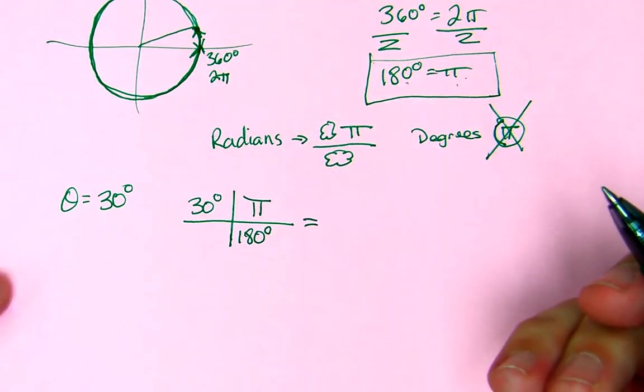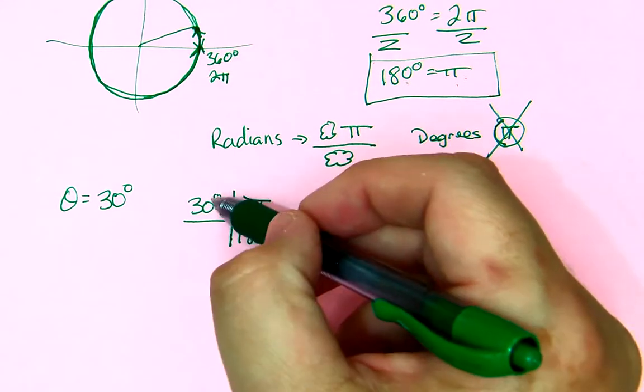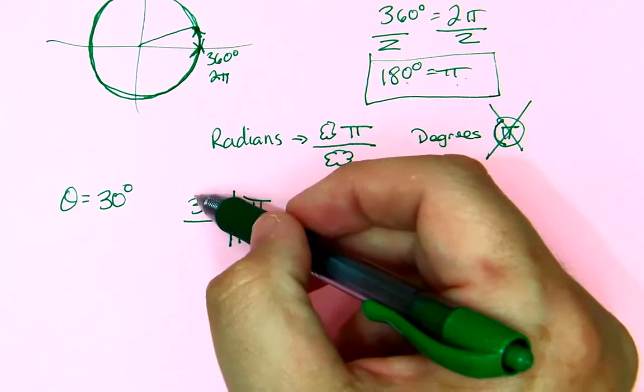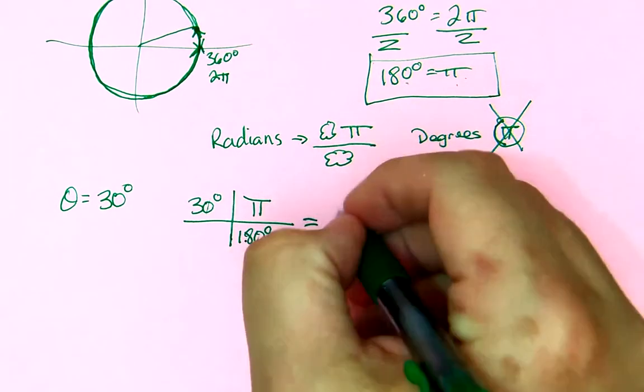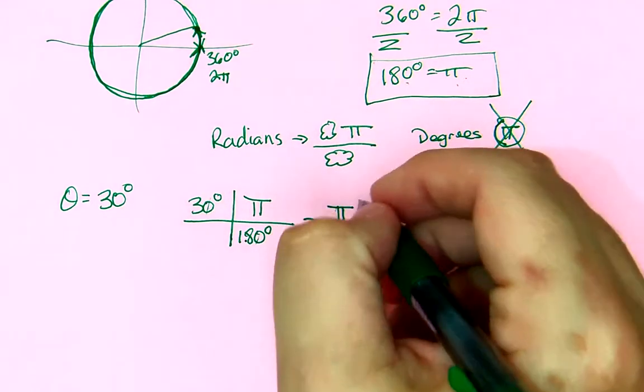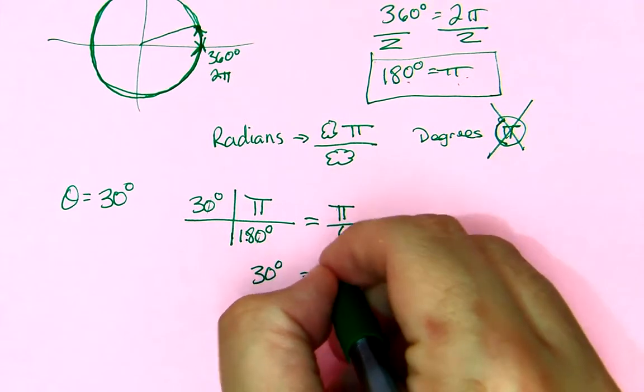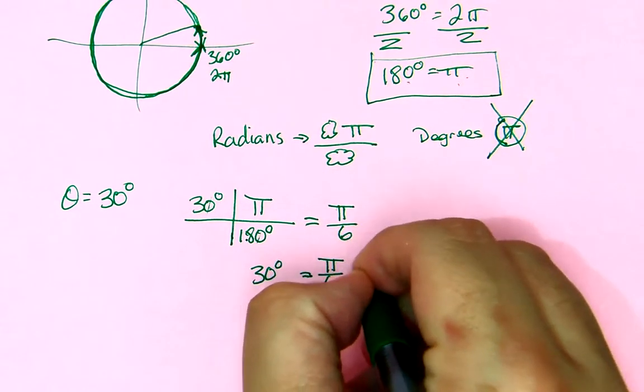180 degrees over π. And I would recommend always doing this by hand, if you can. 3, the zeros divide out. And we get 3 and 180 is 6. You get π over 6. So, 30 degrees is equal to π over 6 radians.